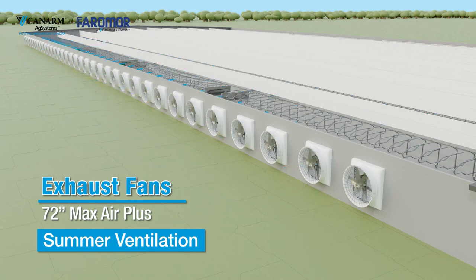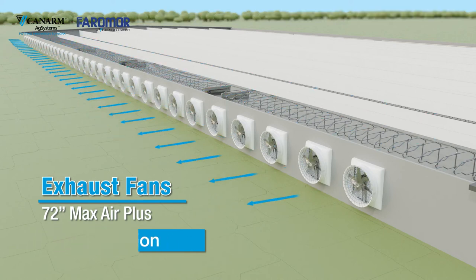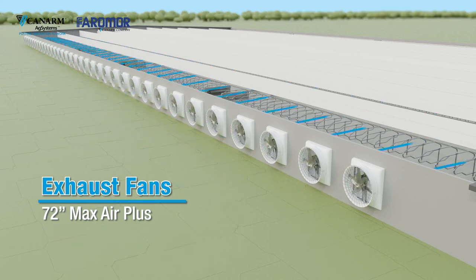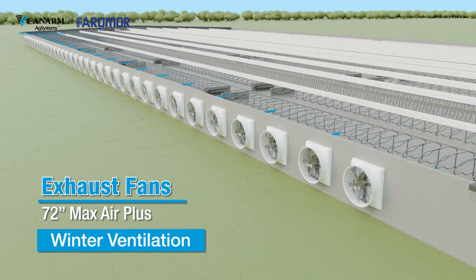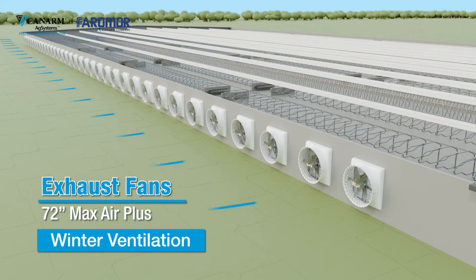As the outdoor temperature drops, the air exchange rate is adjusted to help maintain a more comfortable environment inside the barn. This can be controlled by turning groups of fans off, varying the fan speed, or a combination of these ventilation capacity control methods as necessary.